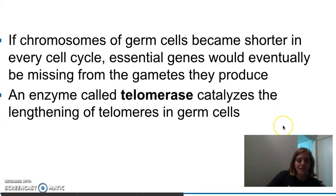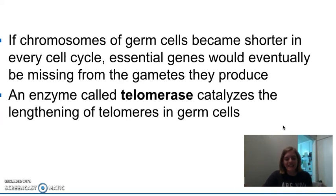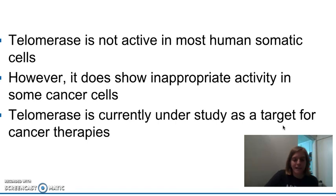We depend on an enzyme known as telomerase, which helps catalyze the lengthening of telomeres in germ cells and brings them back to their original length. As cells divide more and more frequently the telomeres get shorter, but then the enzyme telomerase catalyzes the lengthening of these telomeres and brings them back to their normal size. We also think telomerase is potentially useful for cancer therapy, because while telomerase is not active in many regular human somatic cells, it does seem to be present in cancer cells, which allows cancer cells to continue to replicate the full amount of DNA.